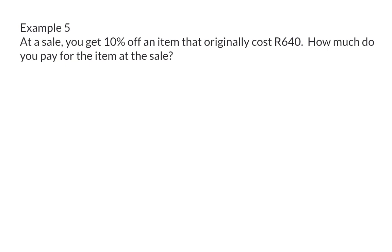Example 5. At a sale, you get 10% off an item that originally cost 640 Rand. How much do you pay for the item at the sale? So here we need to determine how much of the original price is 10%, and then subtract that amount from the original cost of the item. We're going to start off with the ratio, which is given as 10% or 10 over 100, and then multiply that by the total amount of 640 Rand. This means that 10% is equal to 64 Rand. This is the amount of discount that you will receive at the sale. To determine the amount that you will have to pay at the sale, we need to take the original amount and subtract the discount. This means that you will pay 576 Rand.